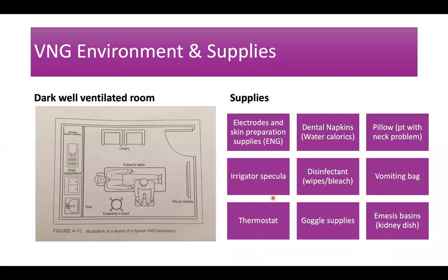The VNG environment is very important. The room should be isolated from the waiting area and away from the booth because calorics can be a difficult test and patients may react loudly. You don't need a very large room, but it needs to be very well darkened with proper ventilation and a thermostat. In very hot or very cold countries, getting the proper room temperature is essential so we can correctly control the irrigation temperature for caloric testing.